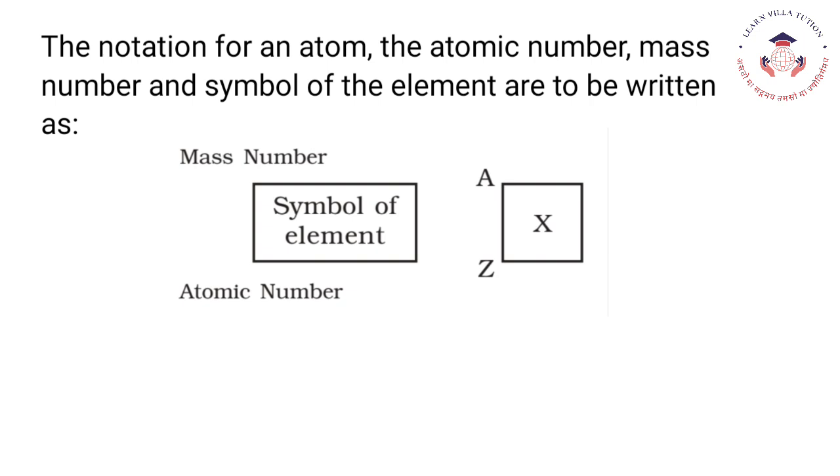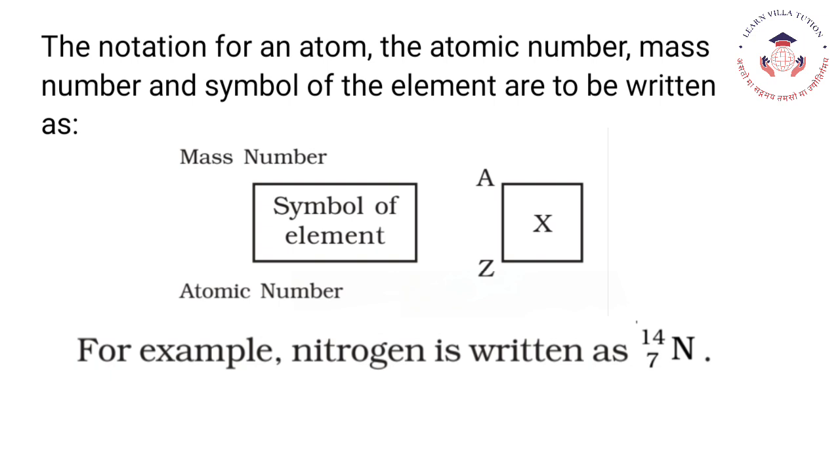For example, nitrogen is written with the mass number 14 on top and atomic number 7 on the bottom side of the nitrogen element.